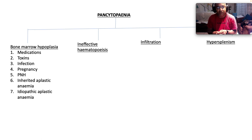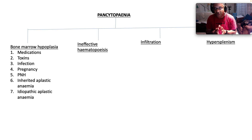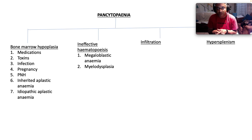What causes bone marrow hypoplasia? A whole truckload of causes: medications — many of them are myelosuppressive — toxins, infections which can infiltrate and cause problems in the bone marrow, pregnancy, paroxysmal nocturnal hemoglobinuria which is a problem with complement-mediated red cell lysis because you have a problem with your GPI anchors on the red cell membrane, inherited aplastic anemia, and idiopathic aplastic anemia. Ineffective hemopoiesis is largely due to megaloblastic anemia, usually on account of B12 or folate deficiency, so you don't have the substrate for DNA synthesis in the cells you are trying to make.